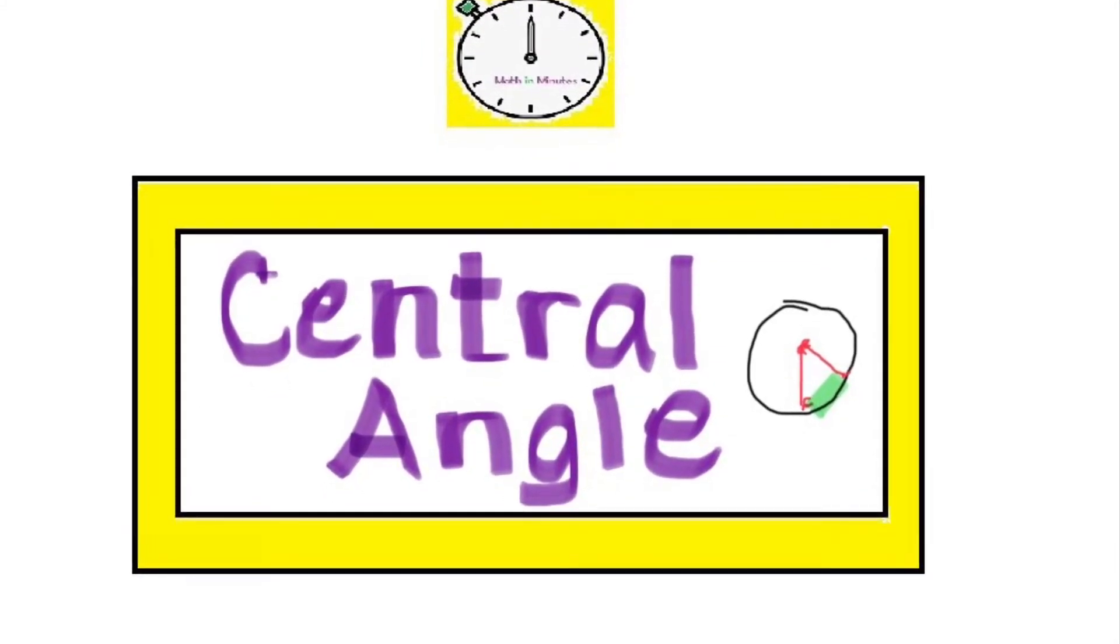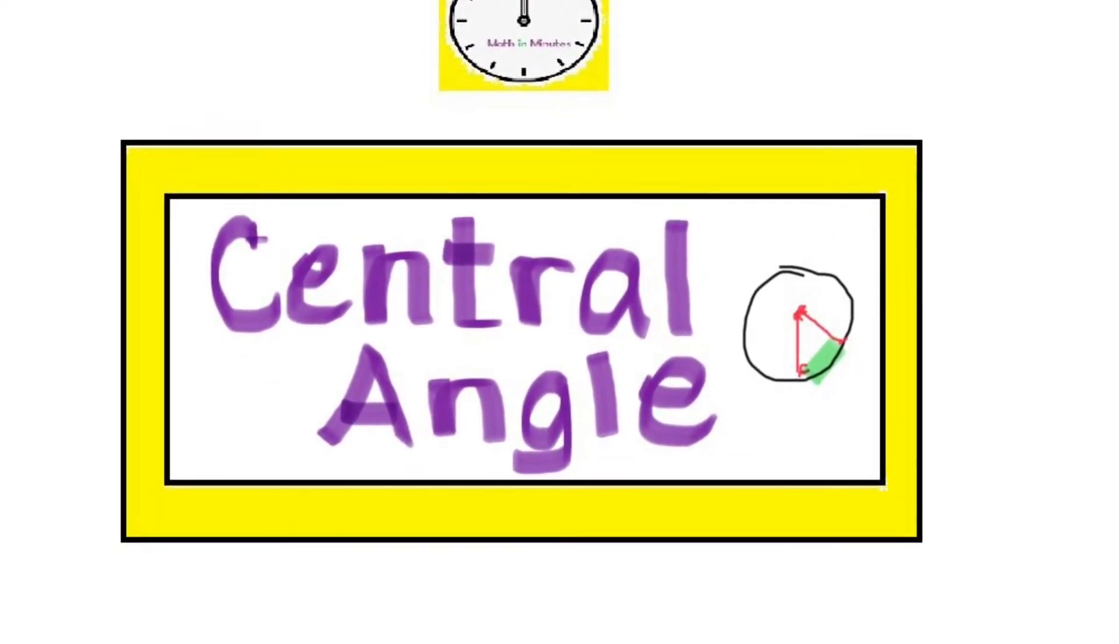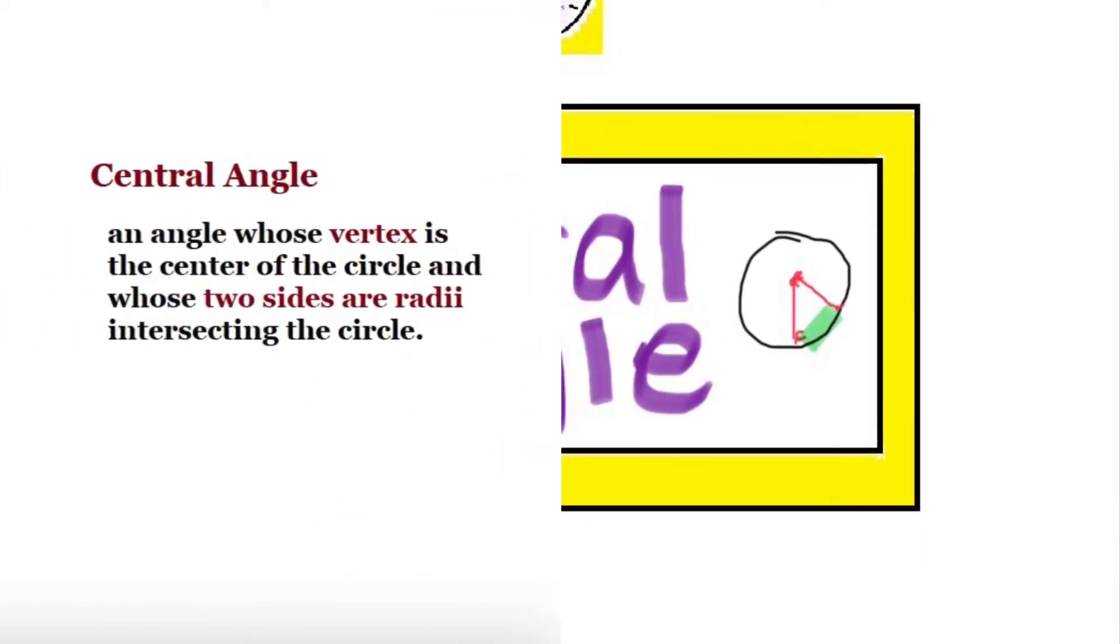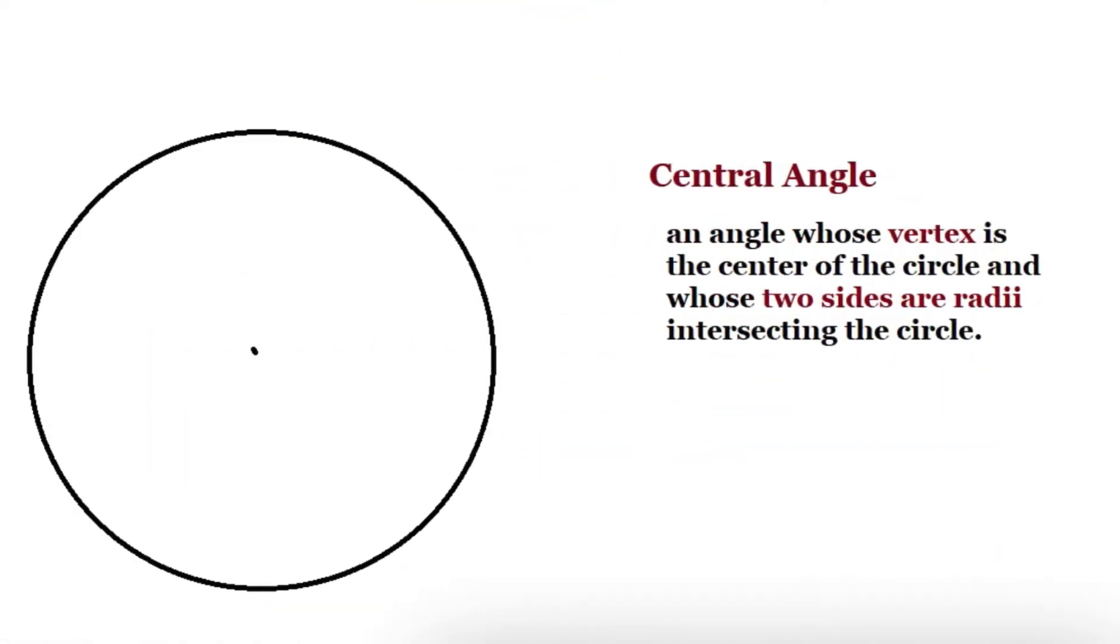This video is on central angles in a circle. So what is a central angle? A central angle is an angle whose vertex is at the center of the circle and whose two sides are radii intersecting the circle.